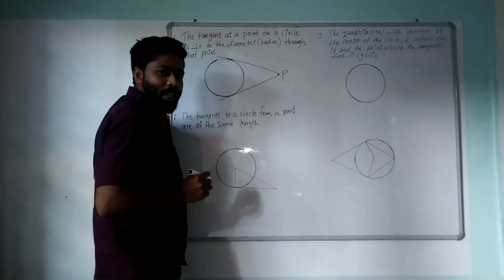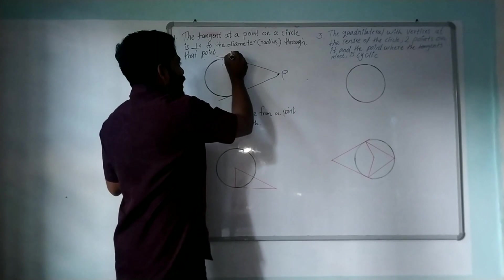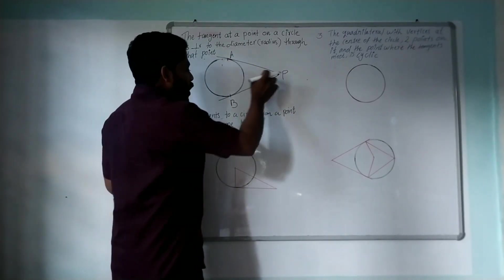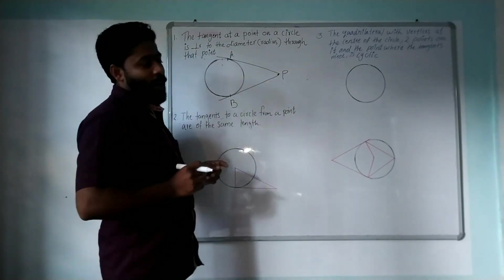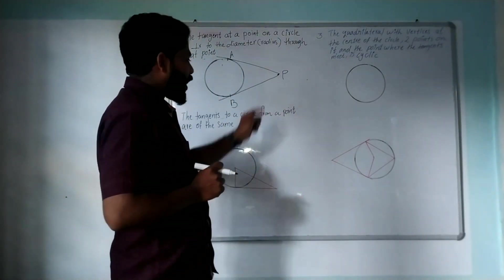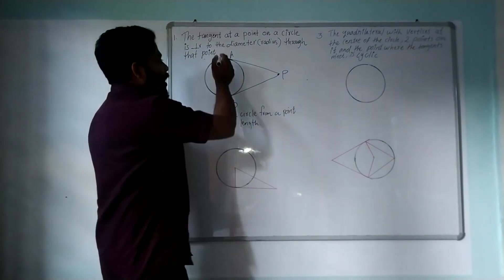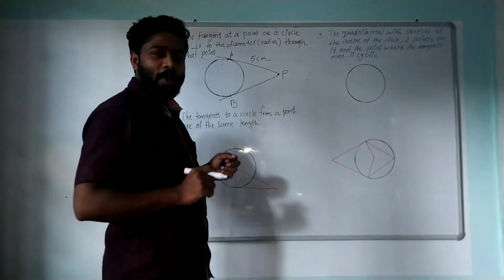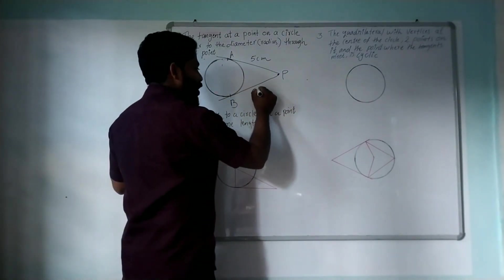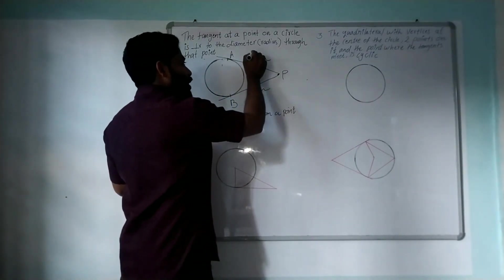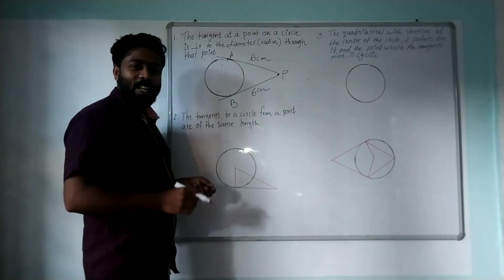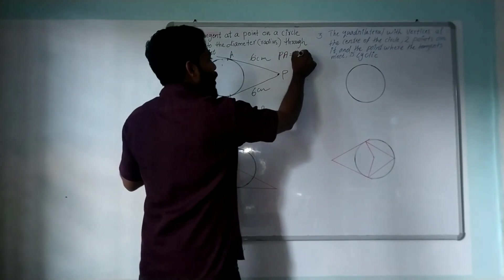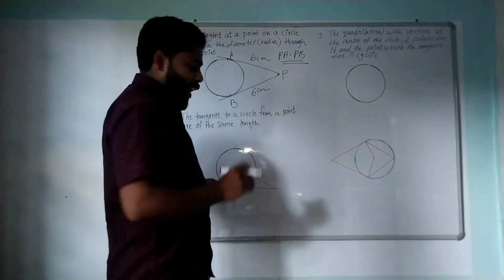That means, this is P, which is a point outside the circle, with points A and B on the circle. PA is equal to PB — the outside point tangents are equal. This is 5 cm, this is 5 cm, this is 5 cm. This is 6 cm, this is 6 cm. That means PA is equal to PB, so when you say PB, it is 6 cm. In this case, this is 3 cm.